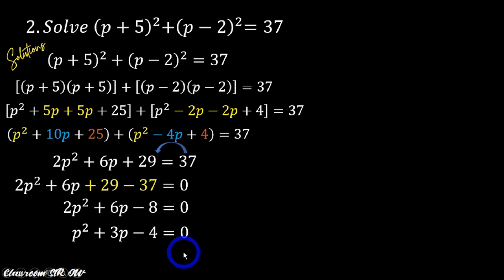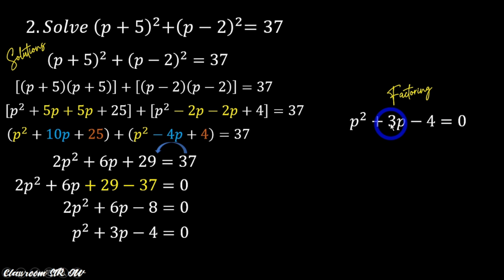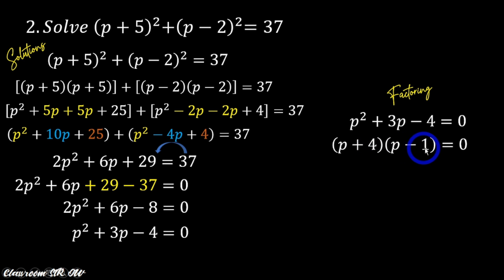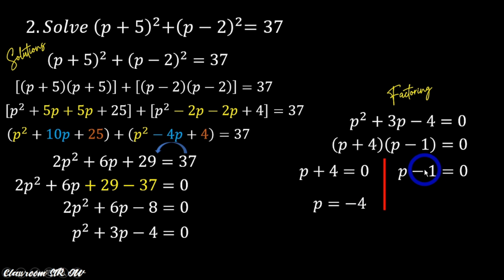Now since our equation is already in the standard form of the quadratic equation, we can use factoring. For p squared plus 3p minus 4 equals zero, we look for two factors whose product is negative 4 and whose sum is positive 3. The factors are (p plus 4)(p minus 1). Because 4 times negative 1 is negative 4, and 4 minus 1 is positive 3. Equating each factor to zero: from p plus 4 equals zero, p is negative 4; and from p minus 1 equals zero, p is 1. Again, we cannot say these are the solutions until we show checking.